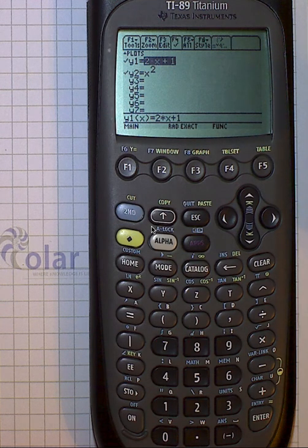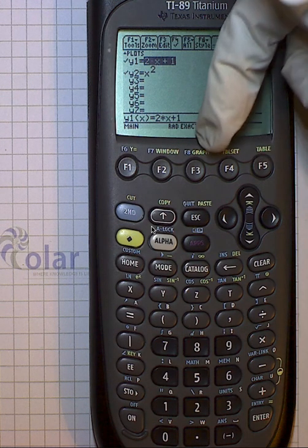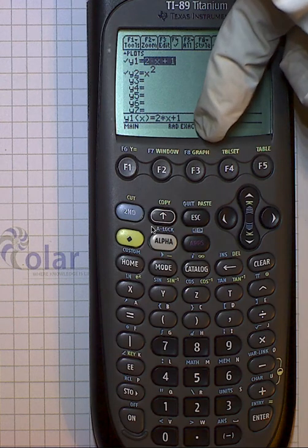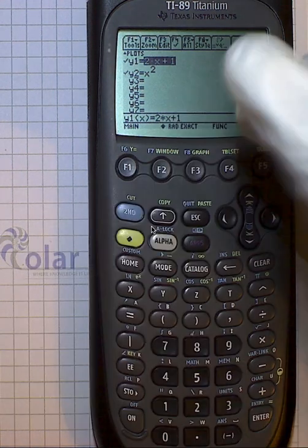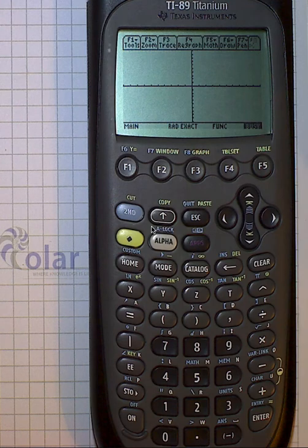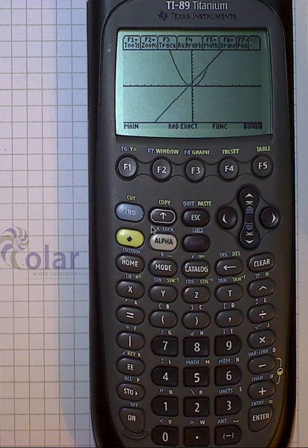And, but for now, let's keep it simple, and have just two of them. So we want to graph these, right? So what we want to do is go to graph, which is under f3 in yellow. So we hit diamond, and then f3, and it will graph them in order. So there's a line, and then there's the quadratic.